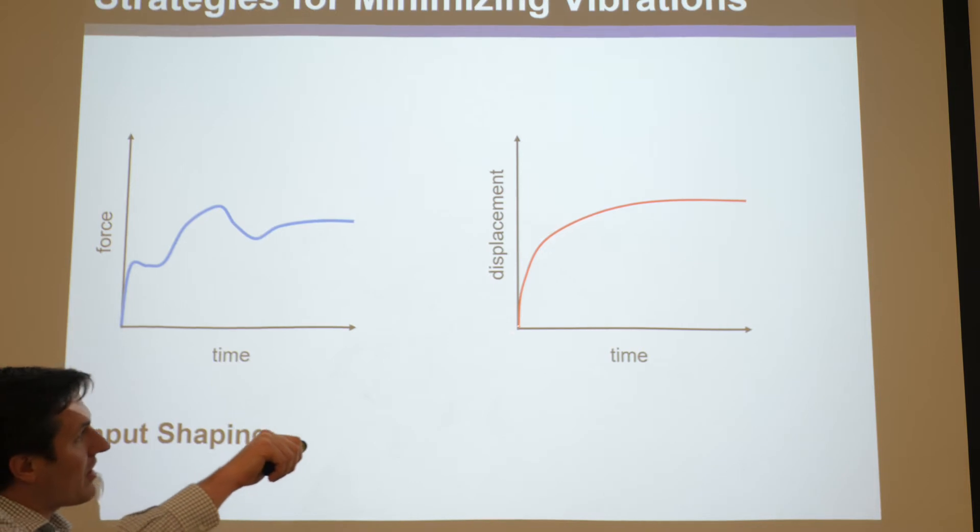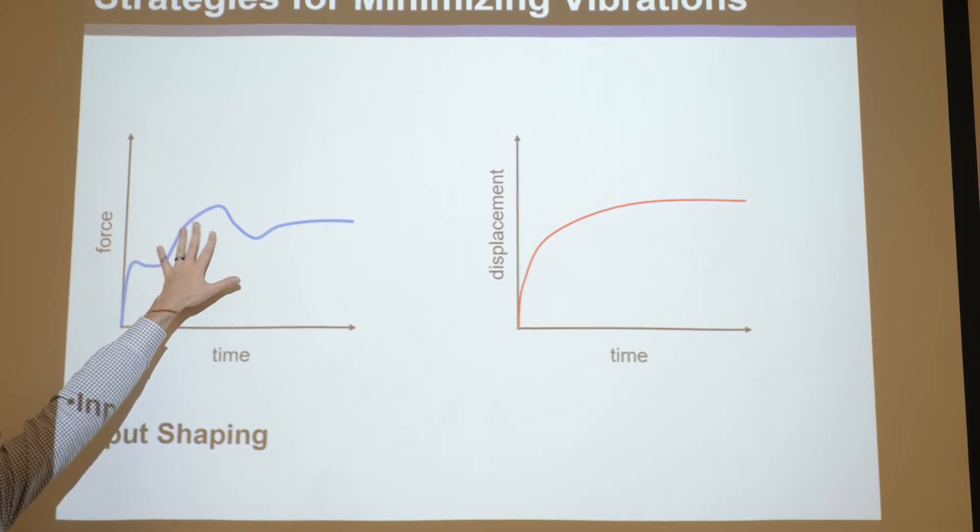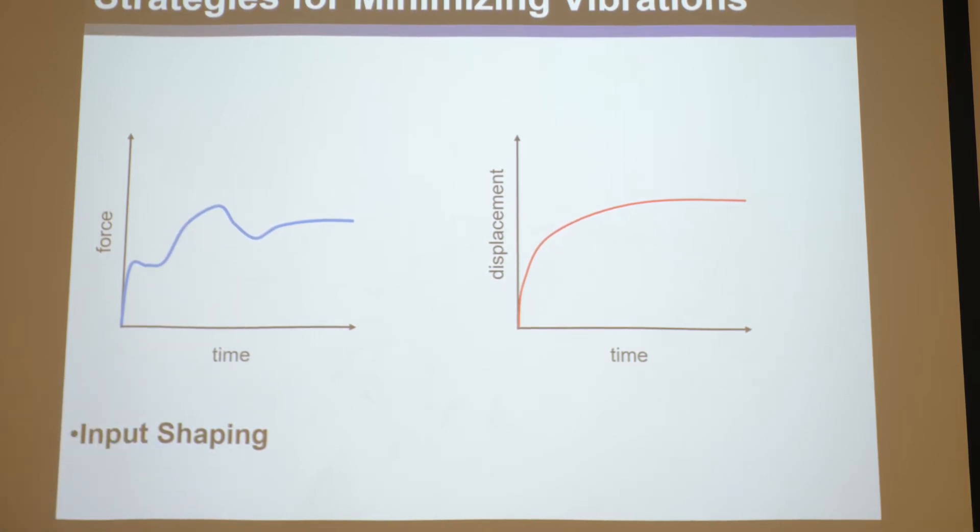And it ends up responding with the displacement like you want, some nice smooth thing. Now I don't know, it depends on the system for how this looks, but that's what input shaping is. You don't have sensors, you don't use closed-loop control, it's open-loop control. You characterize the system, give it a weird force that's shaped so you can get the displacement you want out with no vibrations. So that's another way to get rid of vibrations. It's midway between active and passive control. It's like open-loop, cheaper than active but more expensive than just passive damping in honey or something.